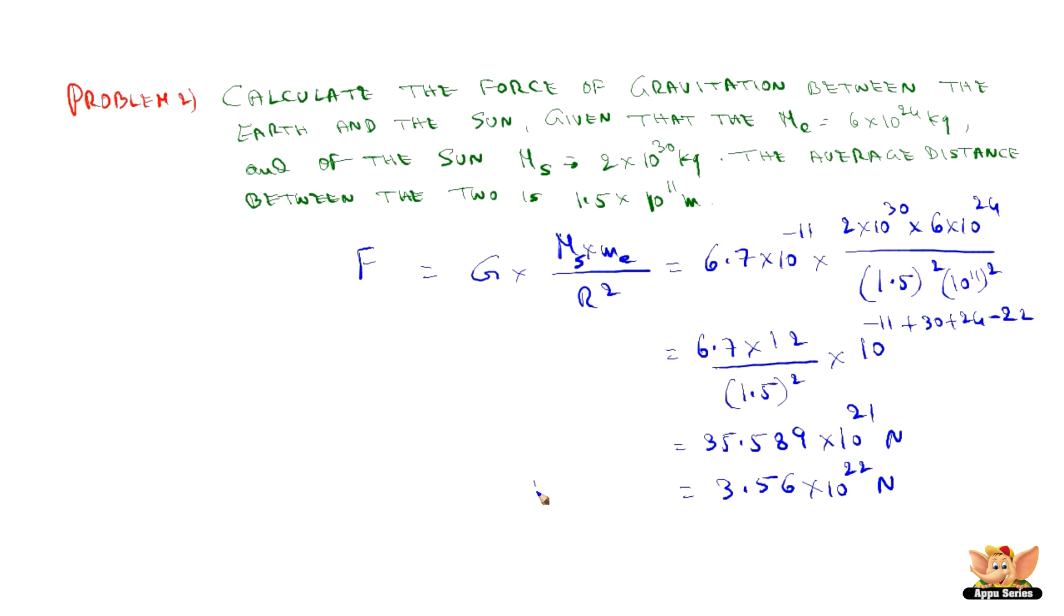Remember that when we are measuring gravitational force at these high values, we always take it as a single integer value. Everything goes into the decimals for the power of 10. So the gravitational force between the earth and the sun is 3.56×10²² N, which is an extremely high force keeping the earth in its orbit around the sun.